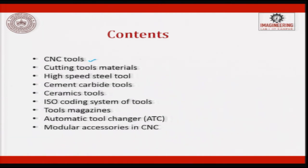In this lecture we will try to see CNC tools, then what are the different tool materials which are used - the most commonly used material HSS, then cemented carbide, then ceramics. We will see how tools are coded, when you have many tools how they are loaded in the tool magazine, automatic tool changing machines, and finally how modular accessories are used in CNC to improve productivity.